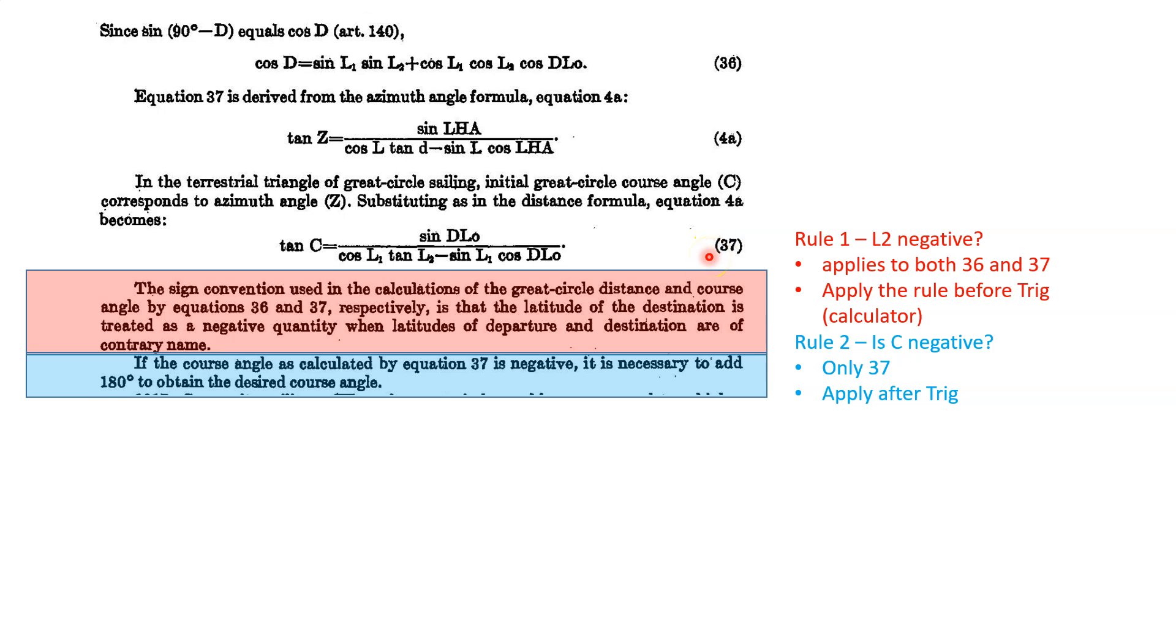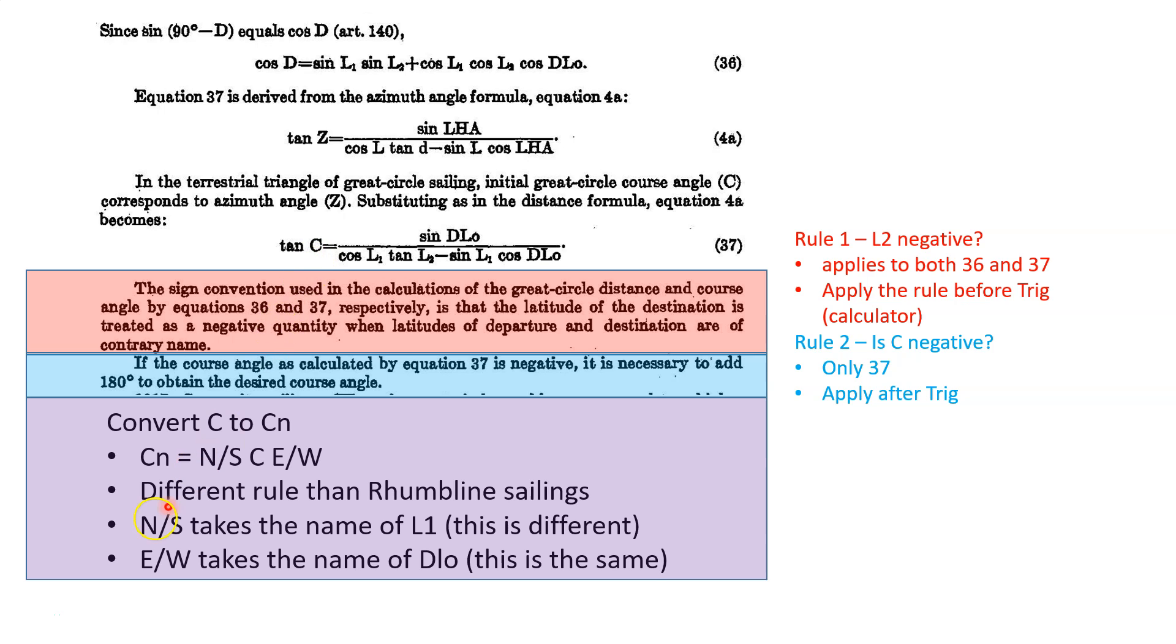Now, there's one more rule, and the rule is not written on Bowditch. But, you know, you should just remember that, hey, this is C, not CN. We still have to convert C to CN. Course angle, the internal angle in our navigation triangle, to CN, the course from north. The freaking N in CN stands for from north. It's the course to steer. So, anyway, here we are. So this is basically it. The third rule is to convert C to CN.